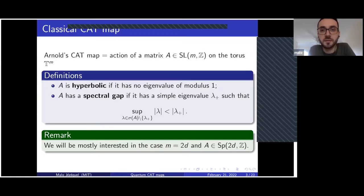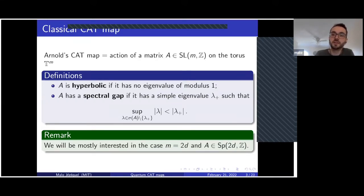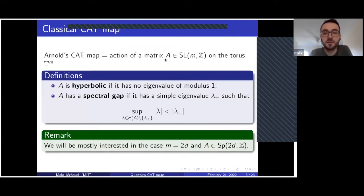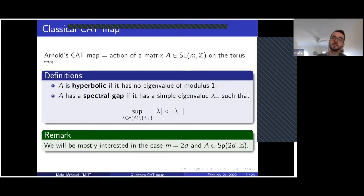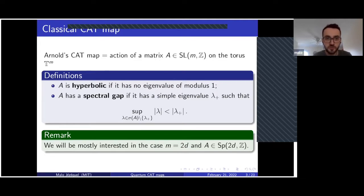A cat map is just the action of a matrix with integer coefficients on the torus. I see the torus as a quotient of Euclidean space by the lattice Z^m. If you have a matrix with integer coefficients, it acts on this quotient, and if the determinant is one, it will be invertible, inducing a diffeomorphism on the torus. This is called a cat map — a continuous automorphism of the torus — a denomination due to Arnold.